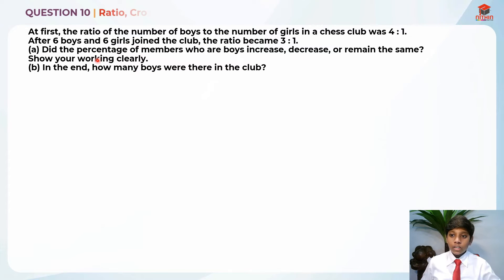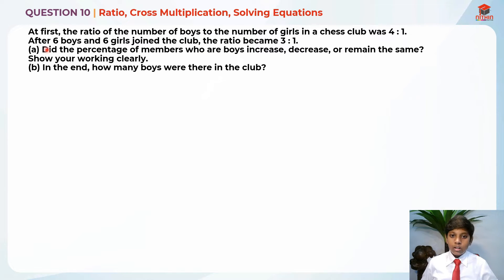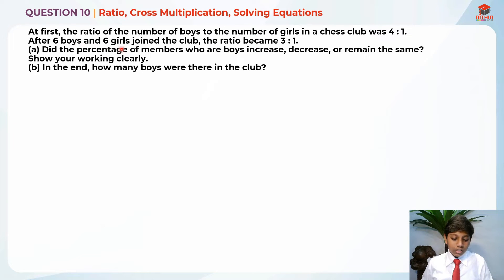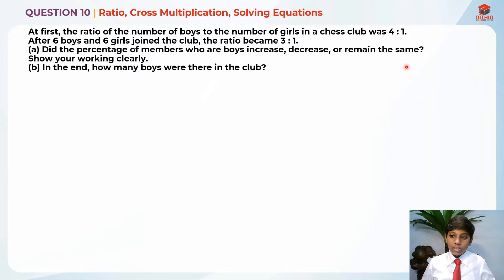This question is stressing us on ratio, cross multiplication, and solving equations. Let's read the question for part A first. At first, the ratio of the number of boys to the number of girls in a chess club was 4 is to 1. After 6 boys and 6 girls joined the club, the ratio became 3 is to 1. Part A: did the percentage of the members who are boys increase, decrease, or remain the same? Show your working clearly.